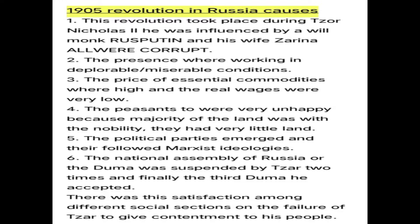There was discrimination in wages paid to workers — metal workers were considered aristocrats, and there was a wage gap between men and women. The prices of essential commodities were high, while real wages were low. For example, workers earning a thousand rupees could only buy goods worth 700 or 800.